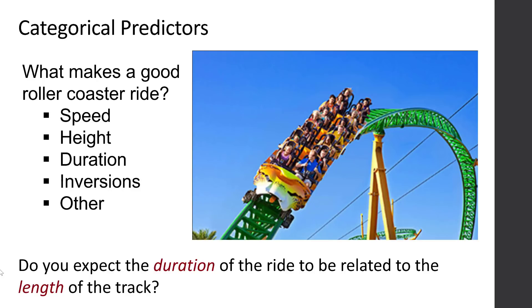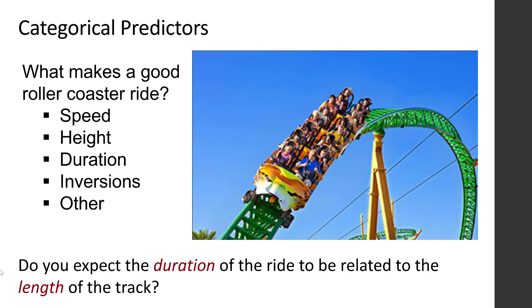We're going to use a data set about roller coasters. What do you think makes a good roller coaster ride? Lots of people are going to say the speed, the height, how long the ride is, whether it takes you upside down - we're going to call that inversions. Some of you might like mechanically accelerated roller coasters, the ones that kind of shoot you out at the beginning. You can download the data set called Coasters located in Canvas along with your lecture notes. Do you expect the duration of the ride to be related to the length of the track?